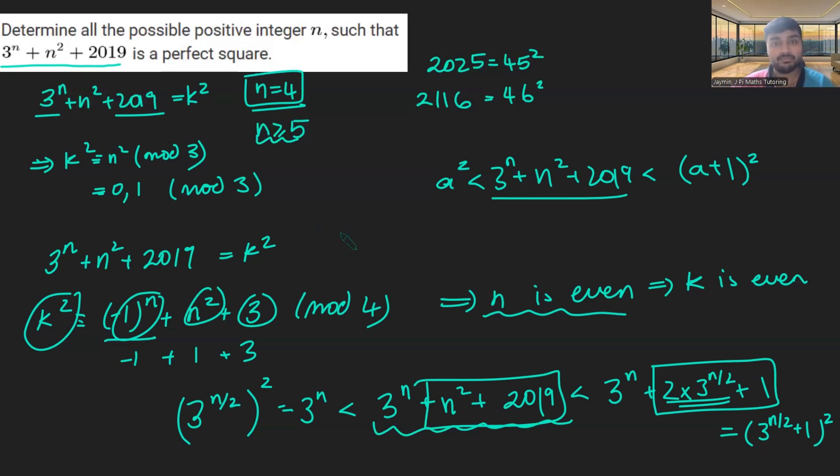And therefore, we can just test those one by one, plug them into this expression. I'll leave that for you to do. It's not super exciting, but you're going to work out that none of those numbers are square. And so therefore, the only solution is n is 4.